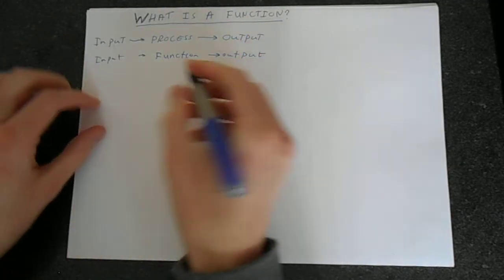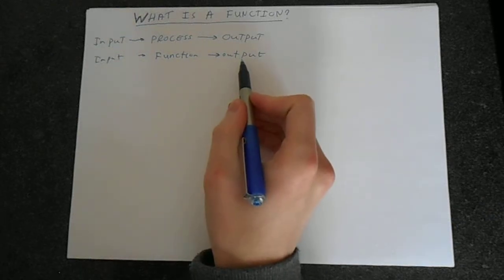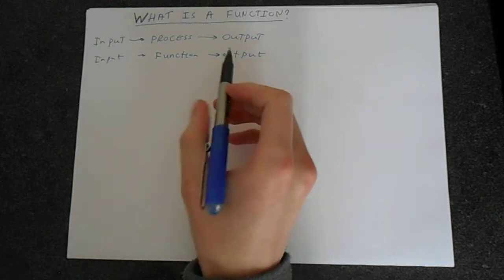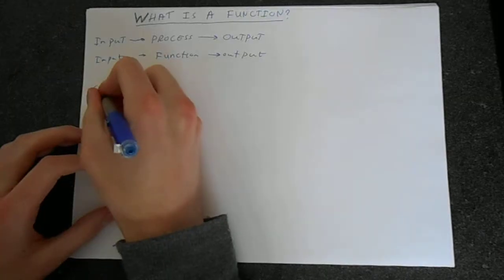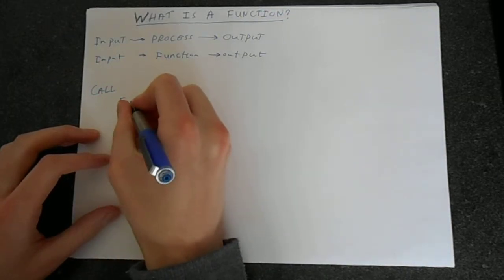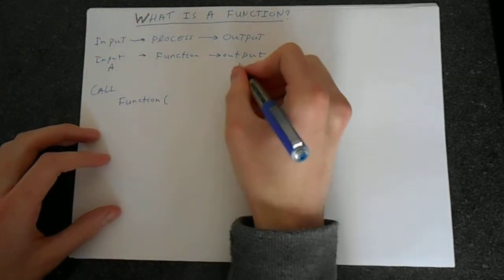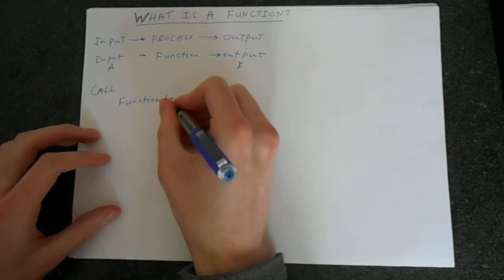Essentially a function is something into which you put an input and you get some output out. We could call a function in a main program. We can just call it 'function' for now, and we could say the input is a and we want an output b.